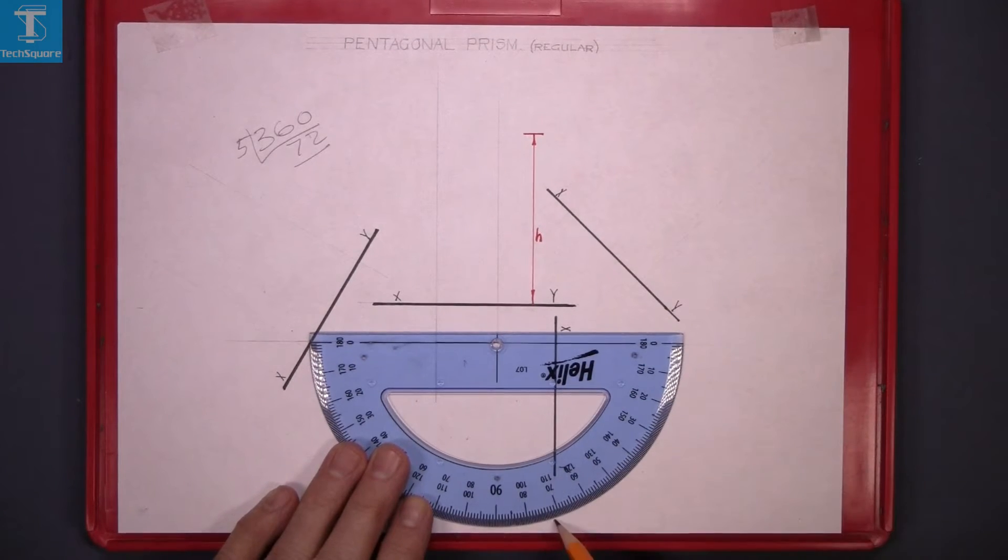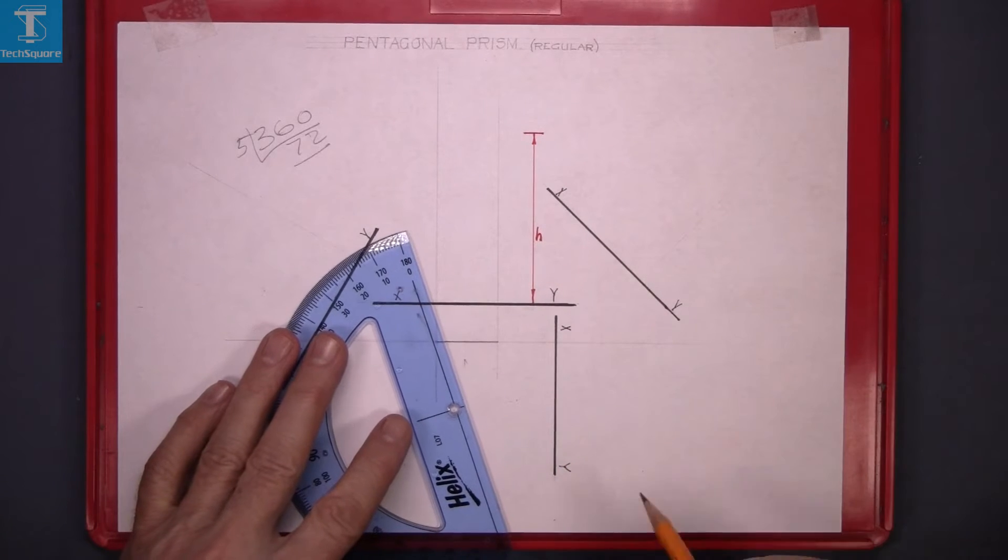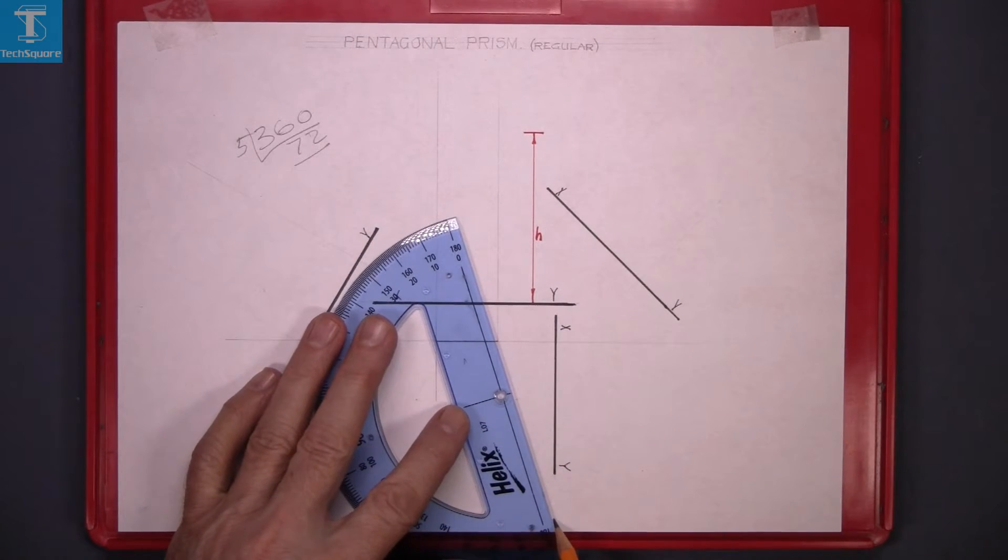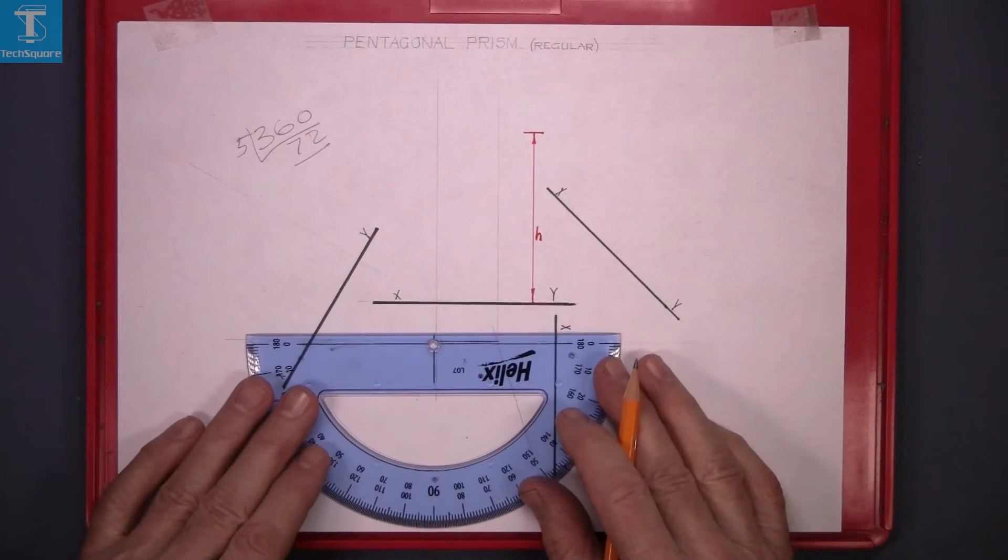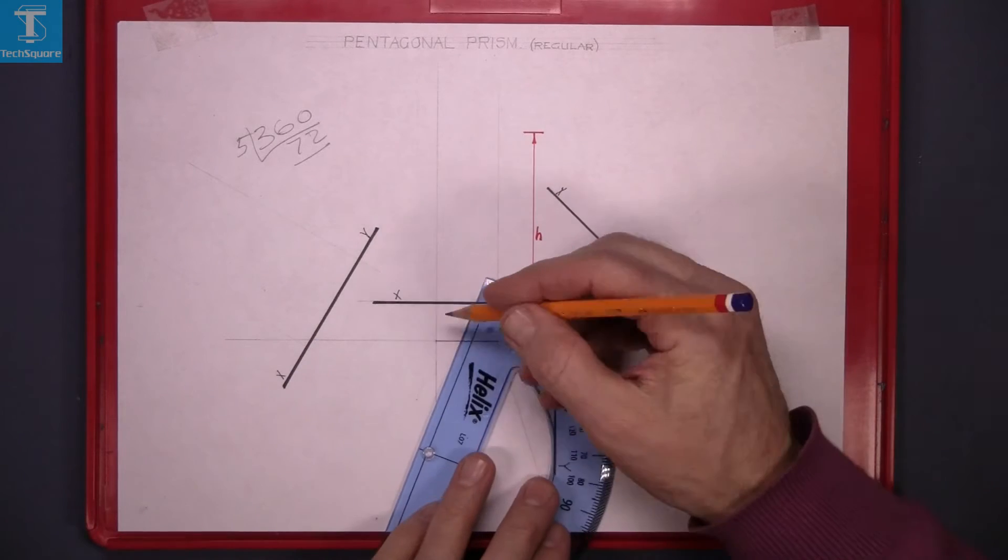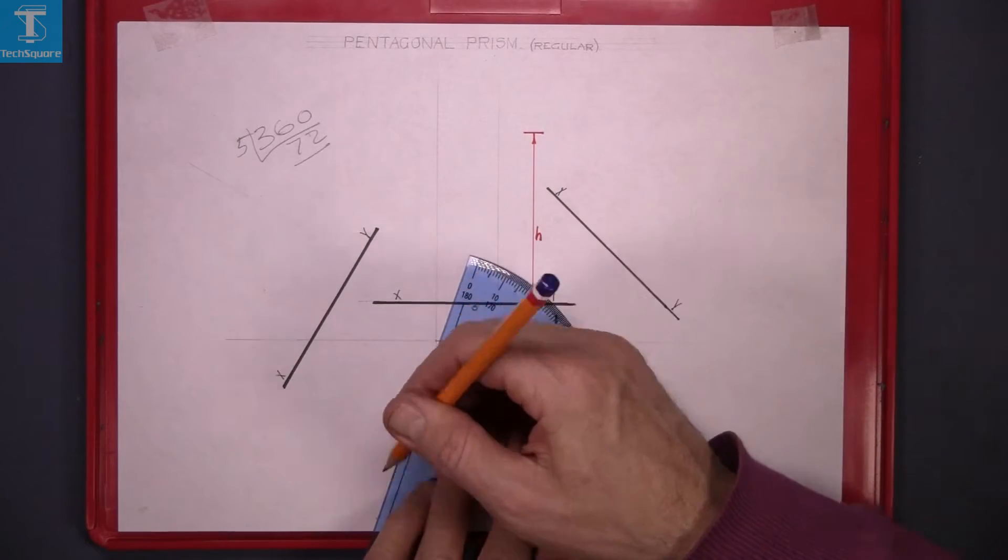Go to 72, mark the point and join that point back to the base. Now repeat the same process on the other side and join back down to the base.